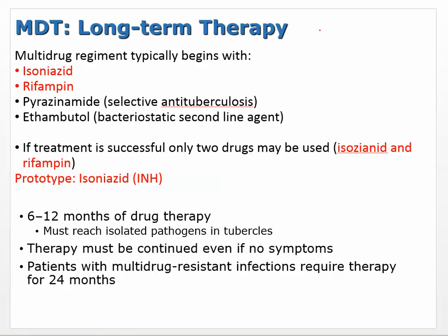Second-line drugs tend to be more toxic and less effective, but at least the bacteria aren't resistant to them. The multidrug treatment for tuberculosis normally begins with isoniazid and rifampin. Other drugs included are pyrazinamide, which is another selective anti-TB drug, and ethambutol, which is bacteriostatic. If treatment is successful, only two drugs may be continued: isoniazid and rifampin. The prototype drug is isoniazid.